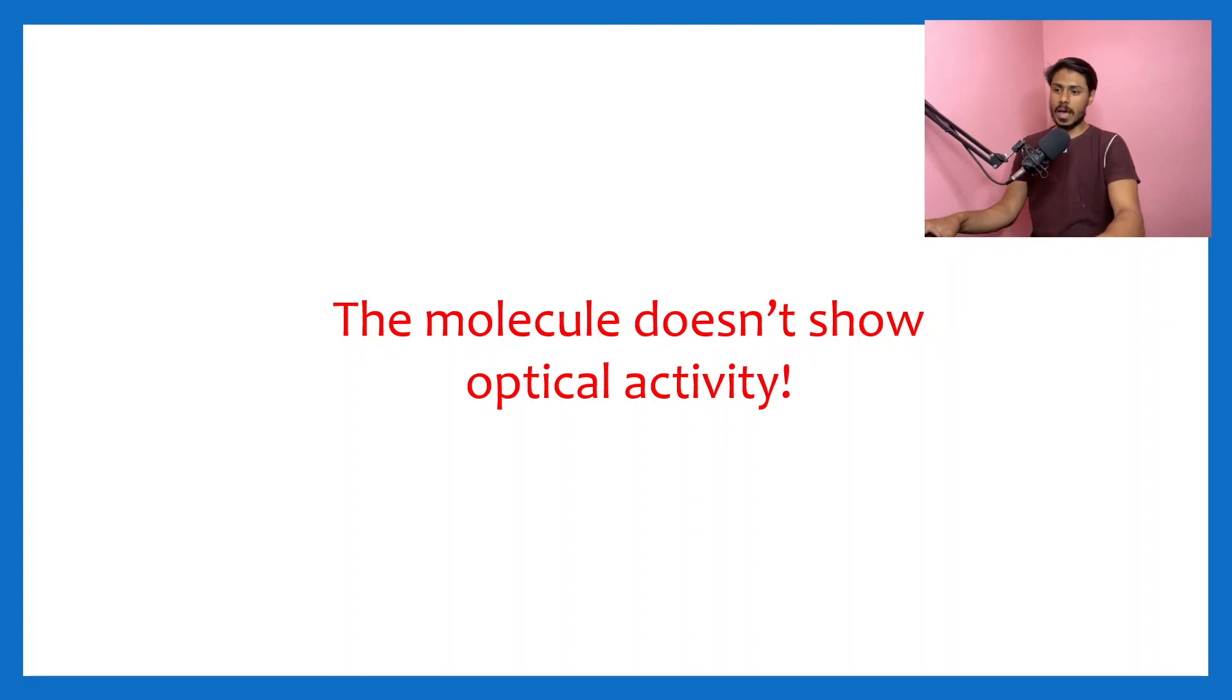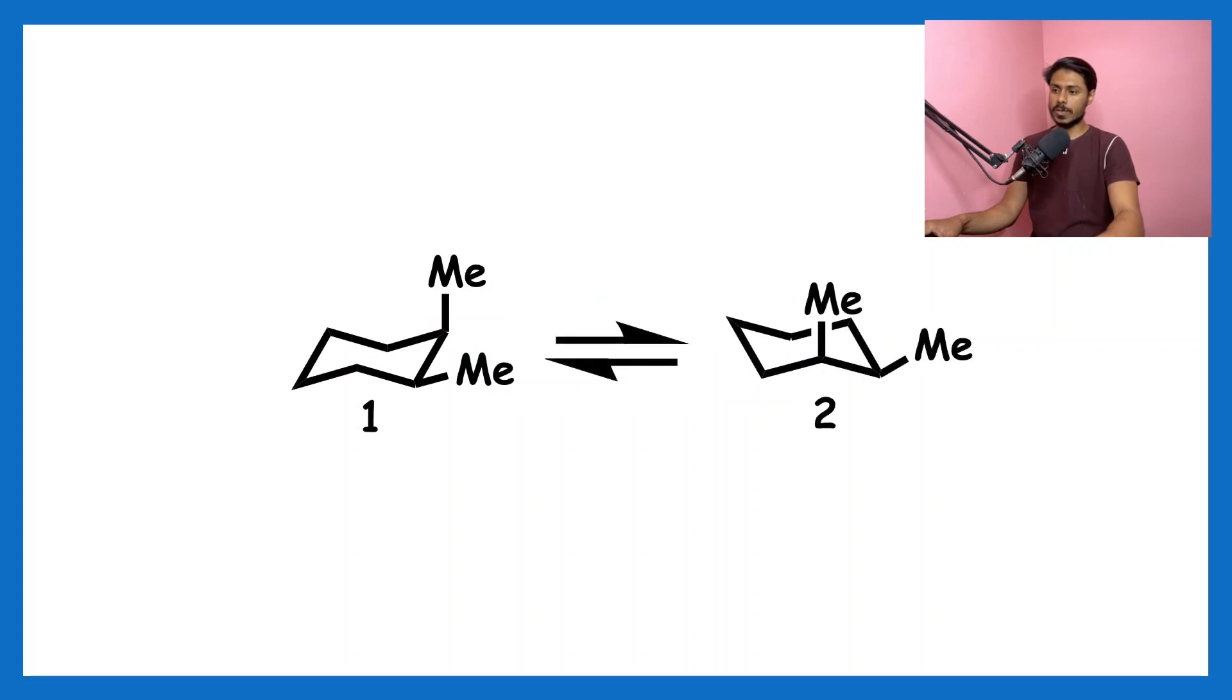...easily flip. If two structures formed after flipping are the same in energy, then this flipping will occur very easily. This is the flipping of this molecule. Molecule one will flip to give molecule two. These two are different conformations of the same molecule, but because the conformation is changing, we...